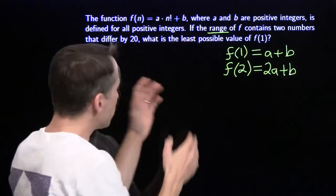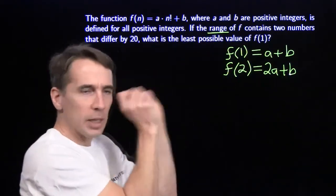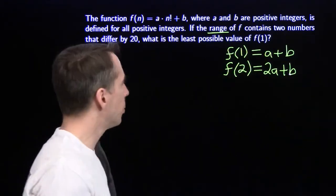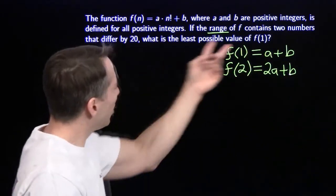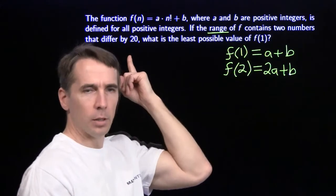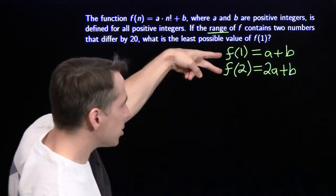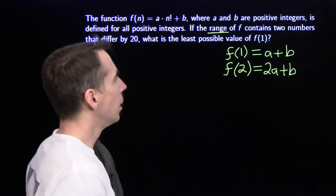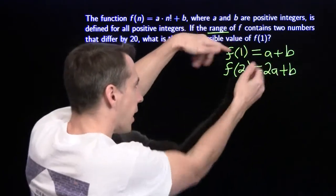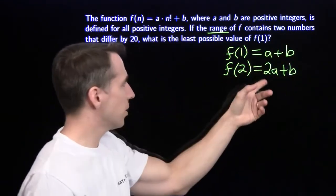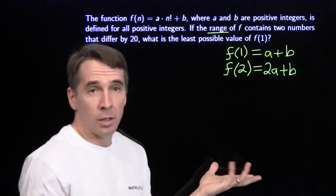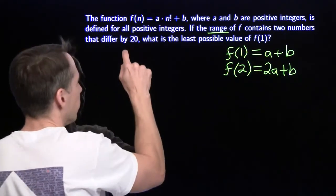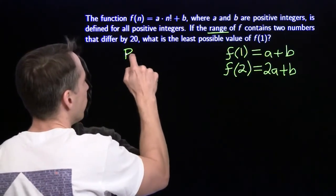The range contains all the numbers coming out of f, and two of them differ by 20. Suppose f(1) = a+b and f(2) = 2a+b are the two that differ by 20. Subtracting, the b's cancel and we get a difference of a. So a could equal 20 — that's one possibility.